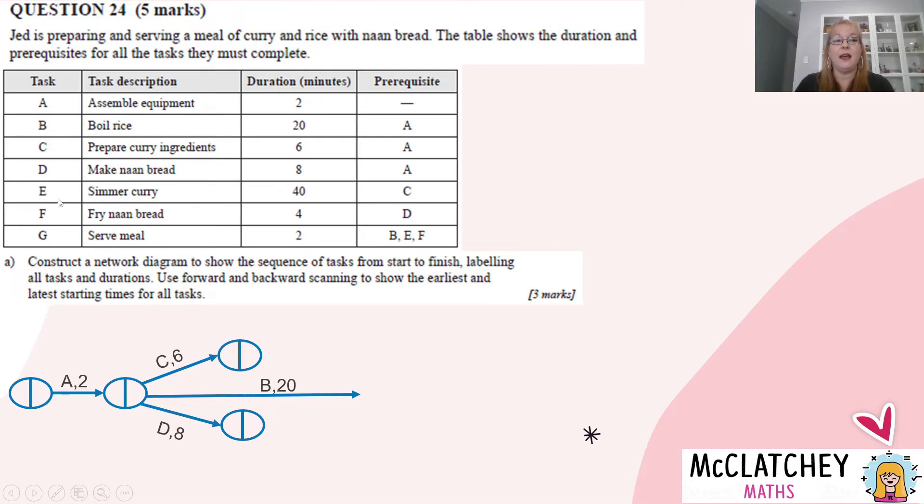So after activity C, we're going to have E. Coming out of D, we're going to have activity F. So let's draw those in. There's activity E, which lasts for 40 minutes, and activity F, which lasts for four minutes.